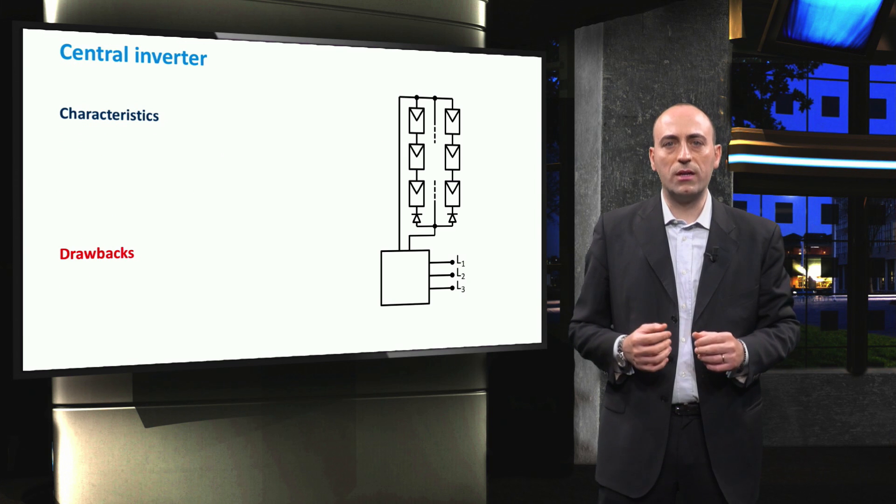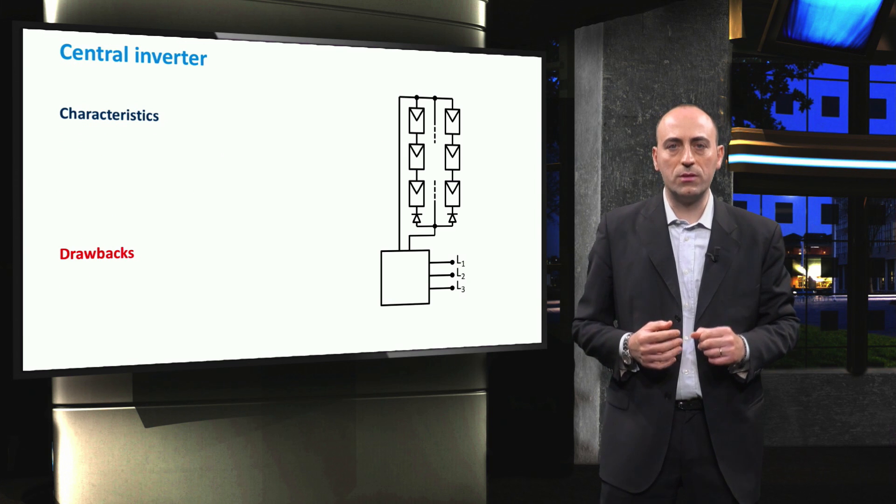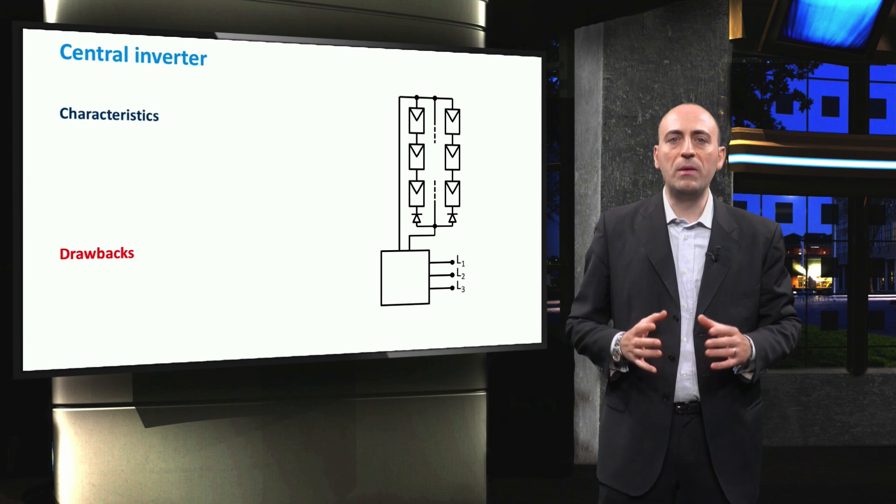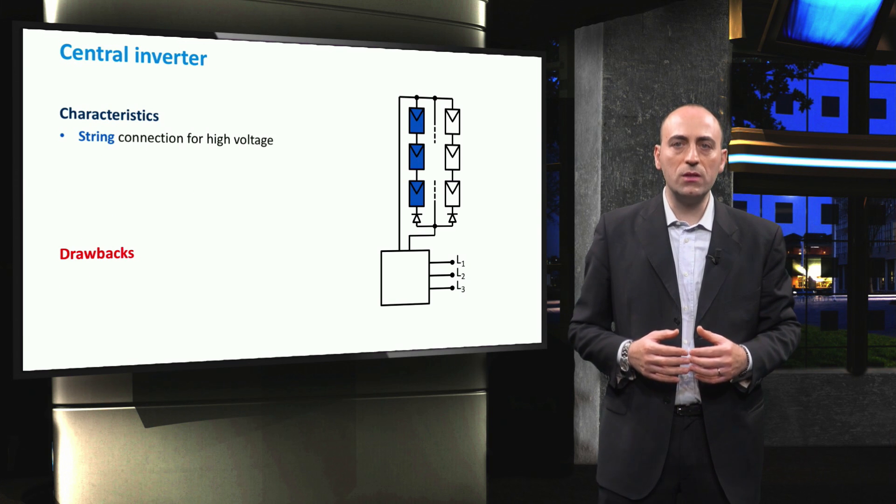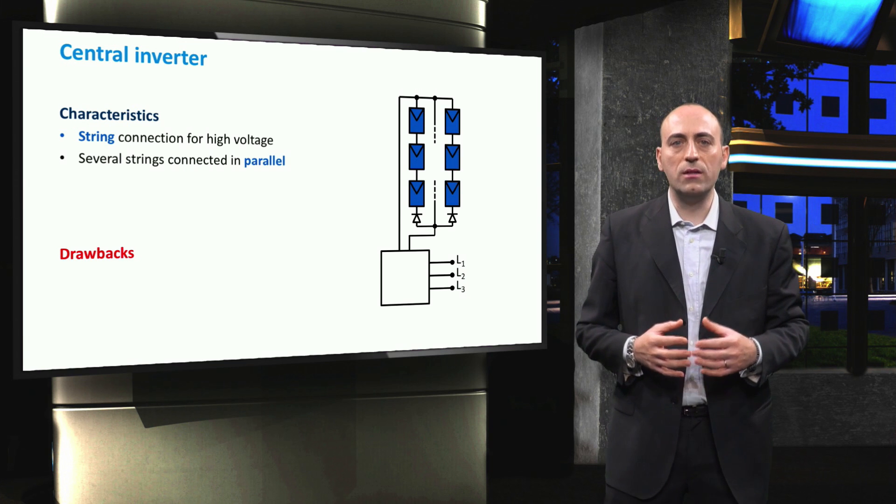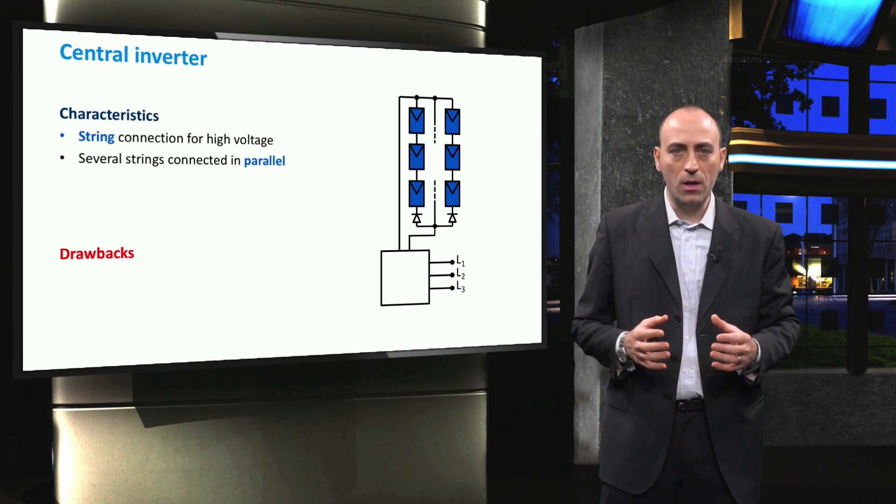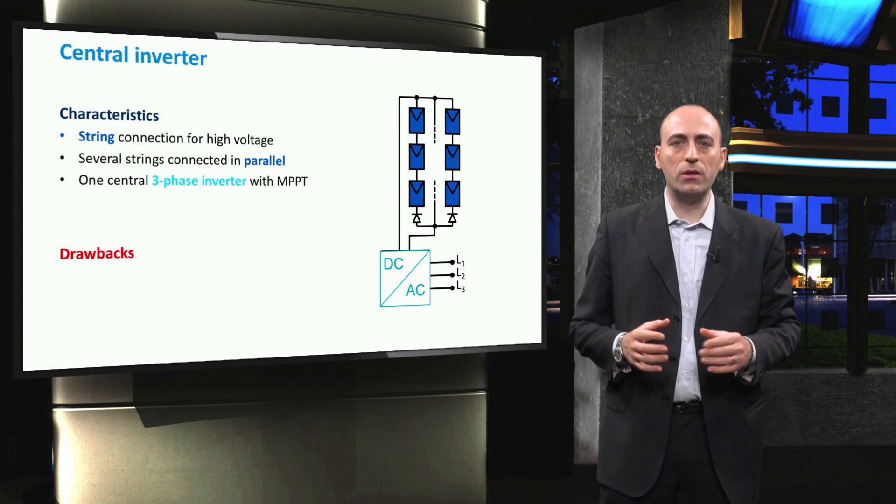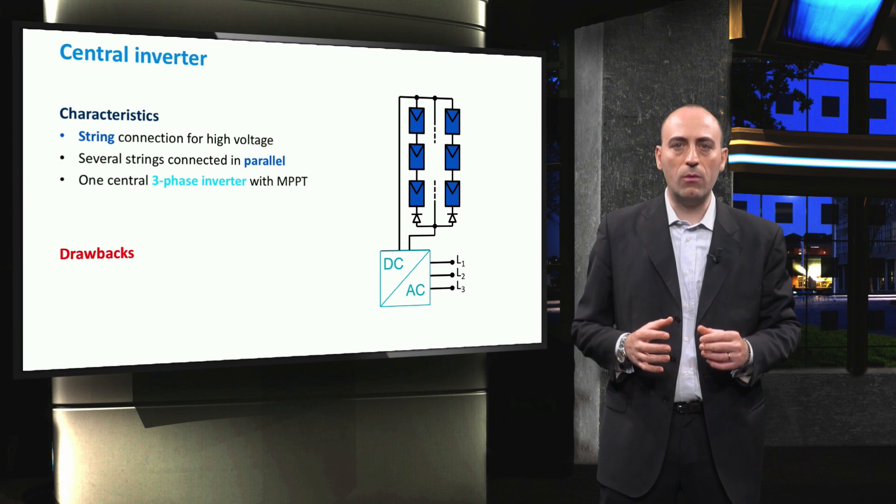Let's start with the simplest architecture employed in PV systems, the central inverters installation. Here we have that PV modules are connected in strings, leading to an increased system voltage, and then the strings are connected in parallel, forming a PV array, which is connected to one central inverter.